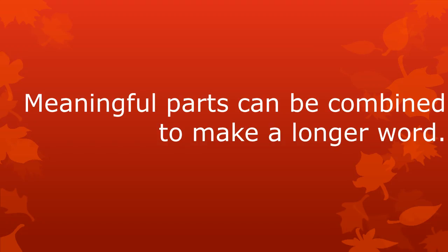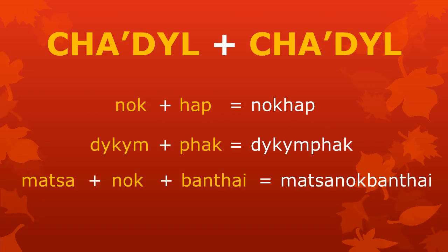Meaningful parts can be combined to make longer words. We can combine one tzadl with another tzadl to make a word. For example, we can combine 'nokk' and 'hap', which are both tzadl, to make 'nokkhap'. We can combine 'dkkm' and 'pakk' to make 'dkmpak'. We can combine the three tzadl 'matca', 'nokk', and 'bantai' to make the word 'matca nokbantai'.